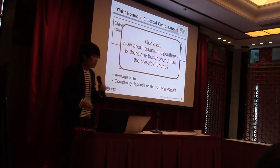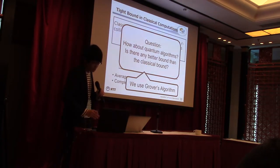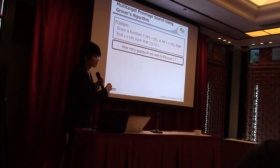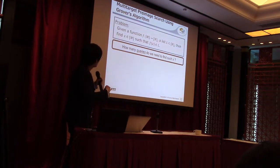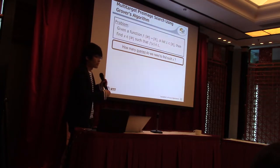I now move to quantum computation. We use Grover's algorithm. I explain a multi-collision framework using Grover's algorithm. Let's consider this problem: given a function f and a list L, find x such that f(x) is in L. How many queries do we need to find such x?